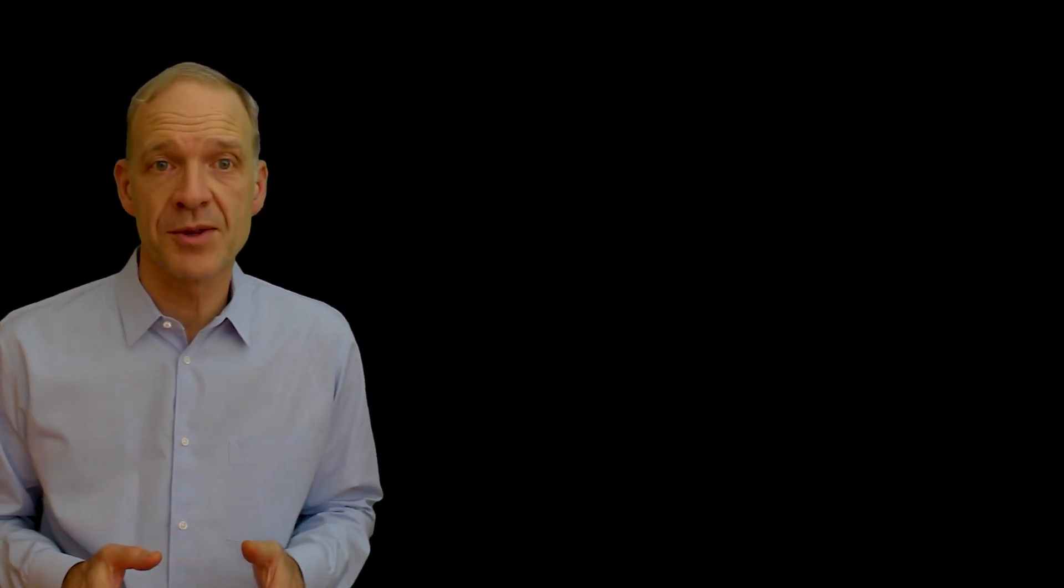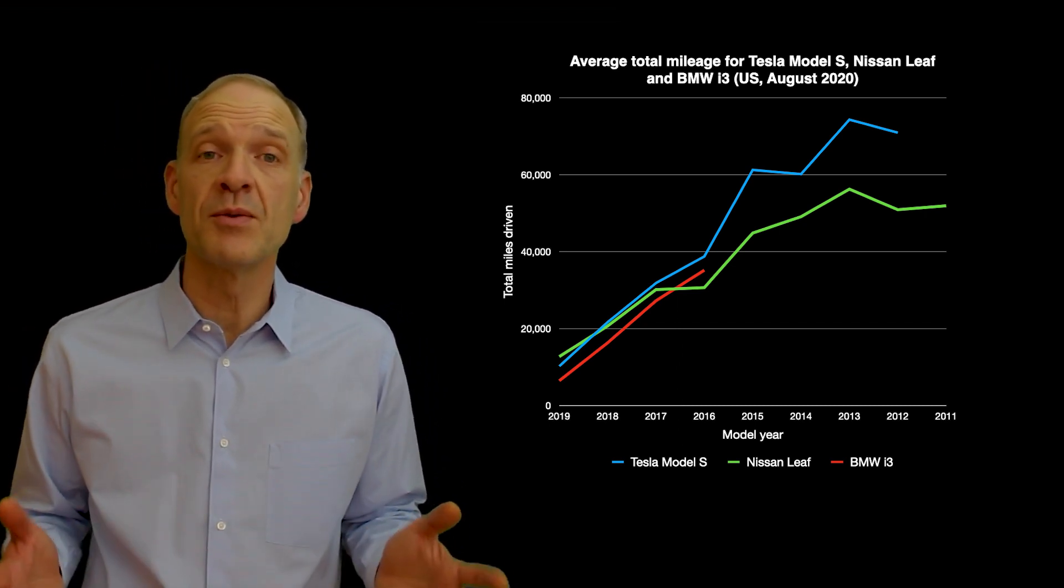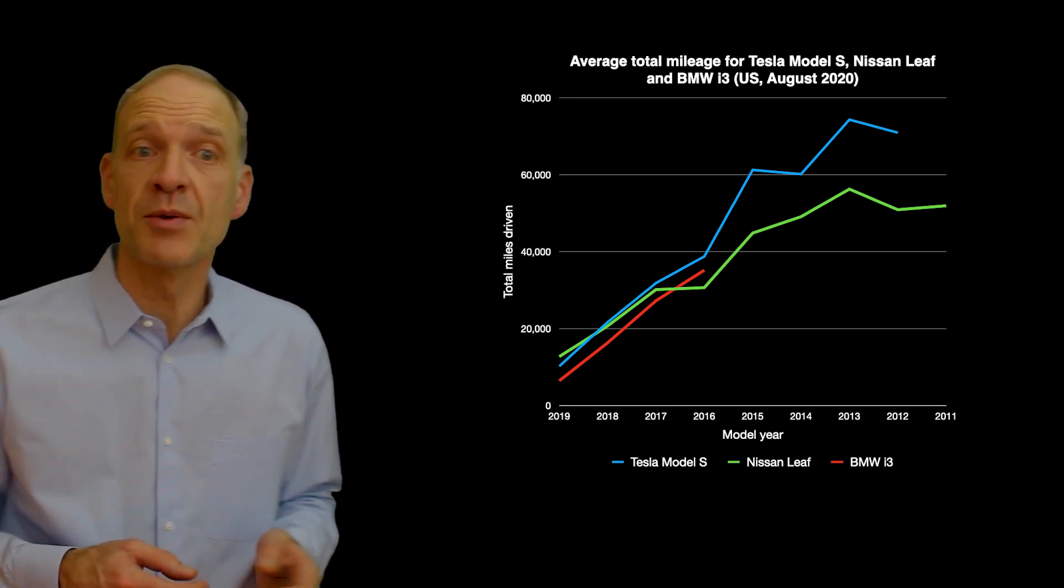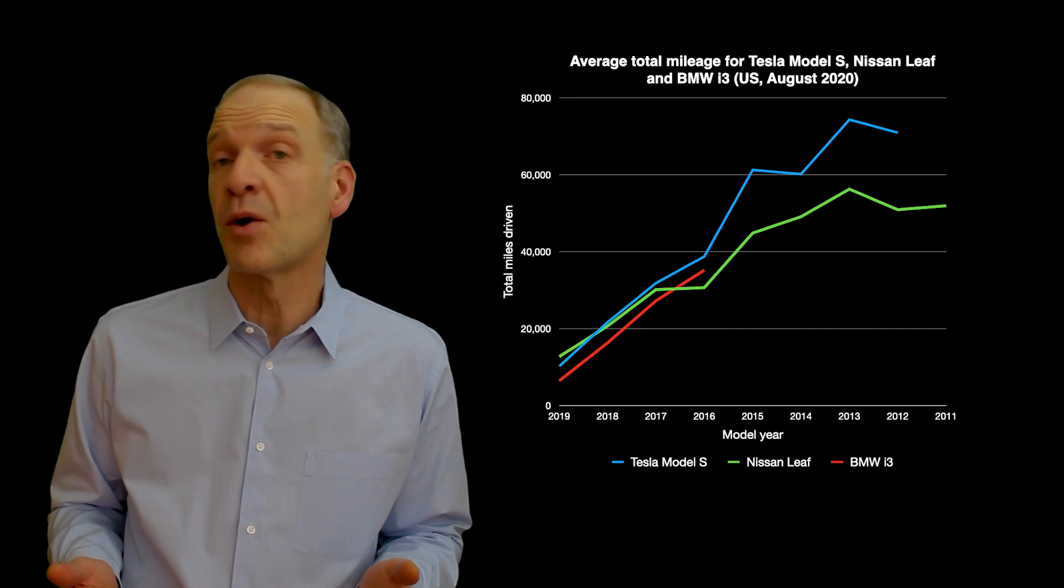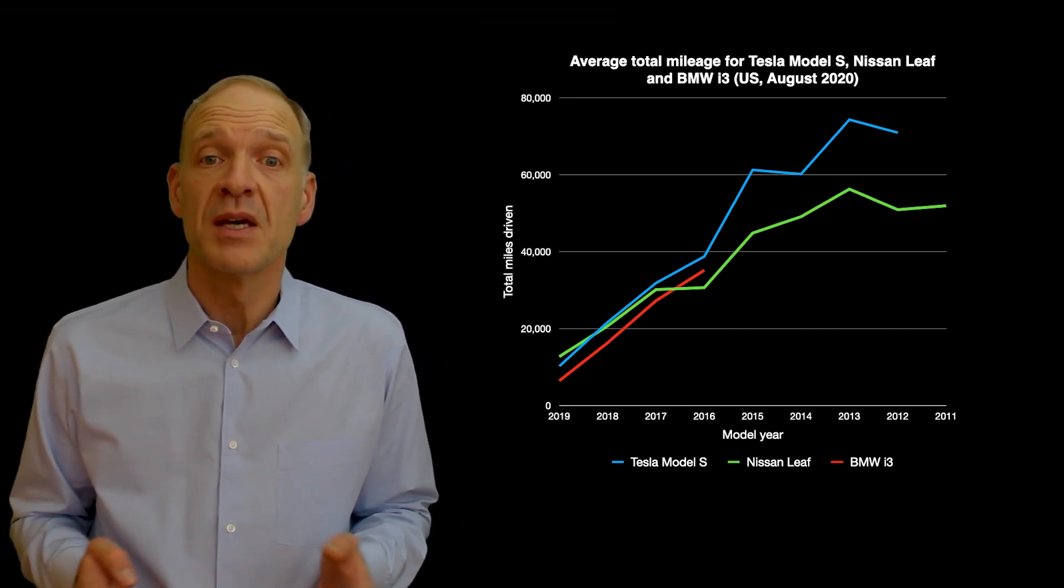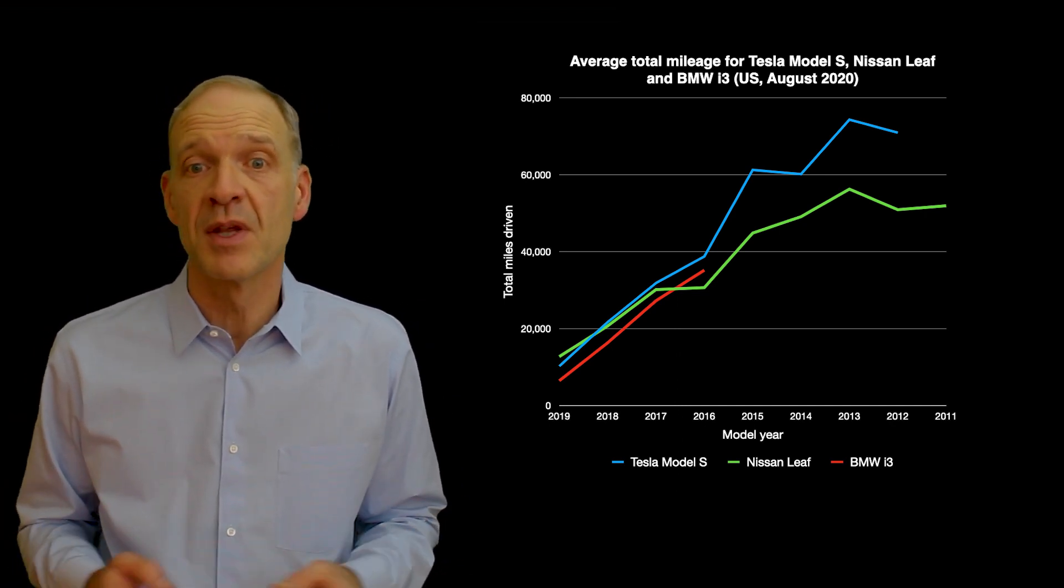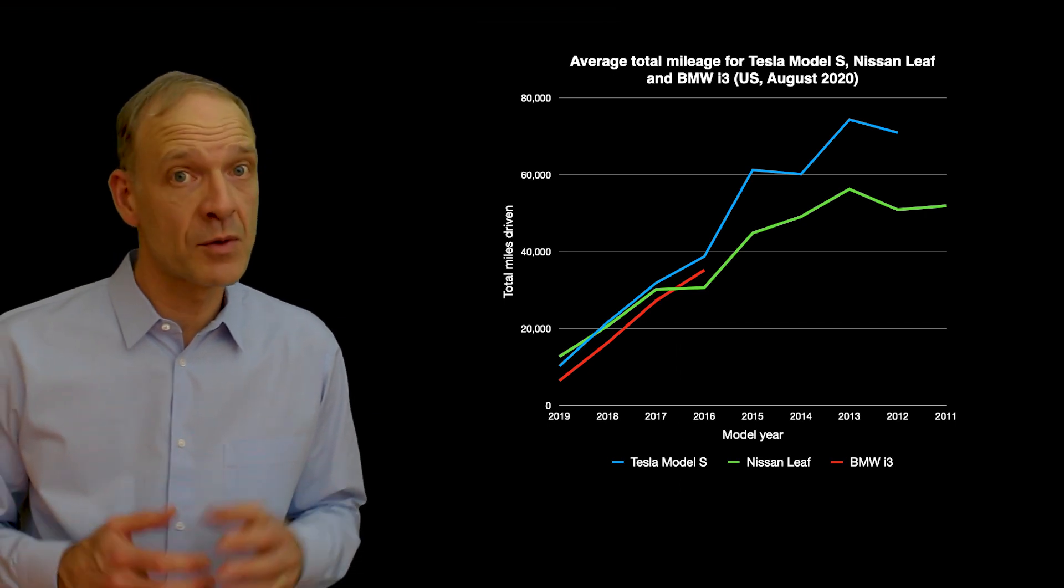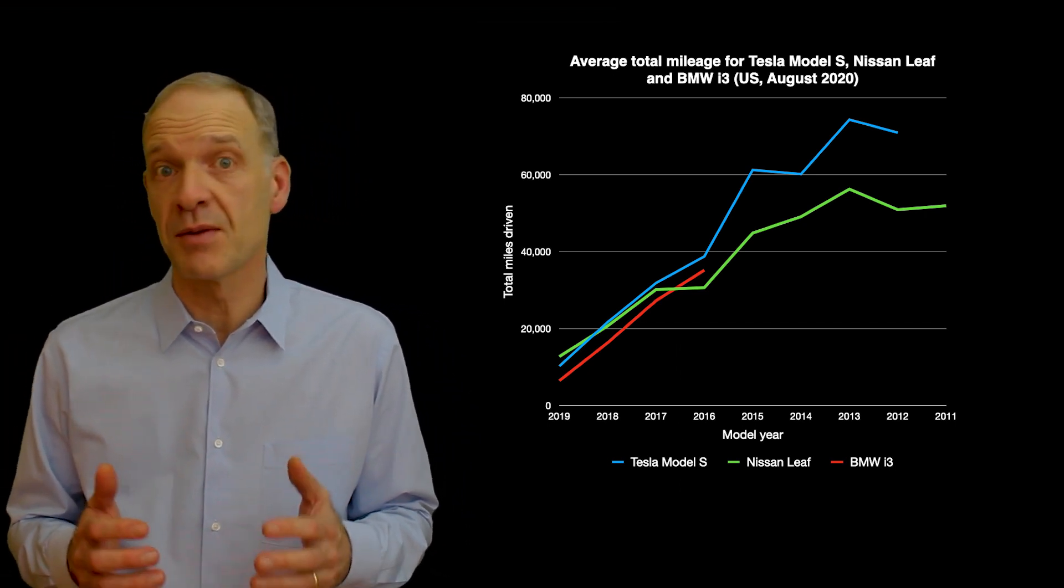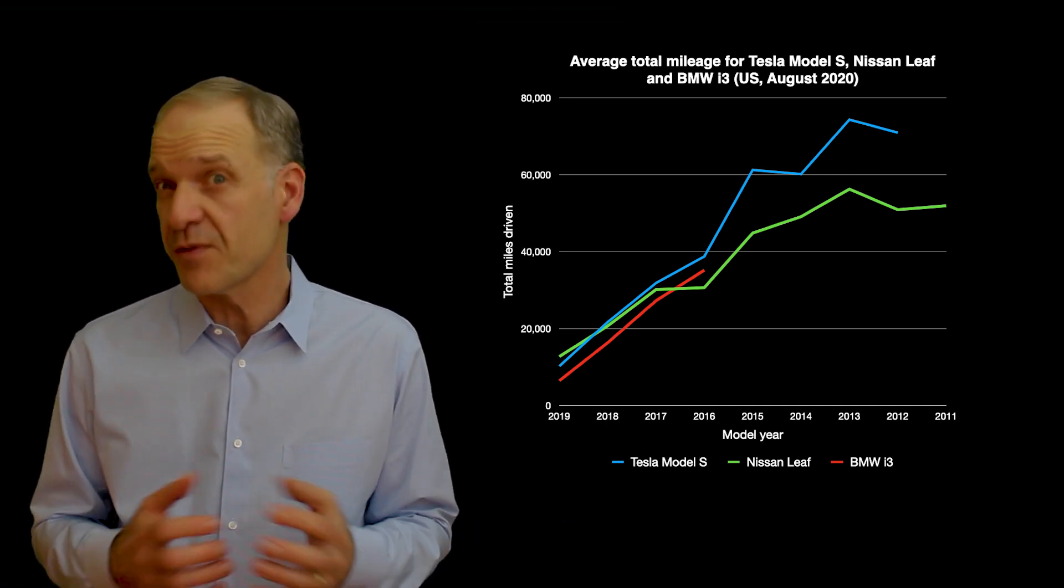One reason is that we are actually not driving that far, so we aren't really using the batteries as much as we could. This chart shows that cars are driven less the older they get, and not that much at all. Early electric vehicles are on average cycled 100 times a year, but that's because they have quite small batteries. A Tesla Model S is usually cycled around 50 times a year.